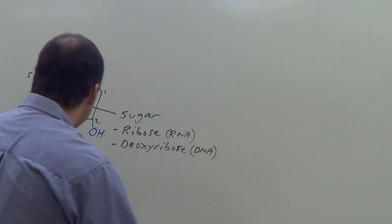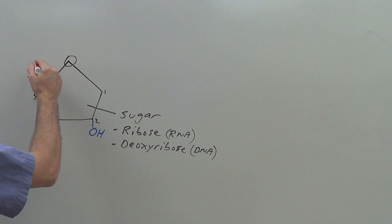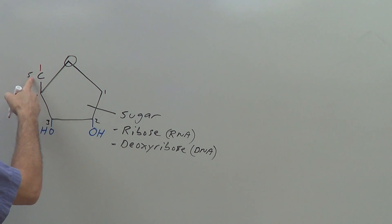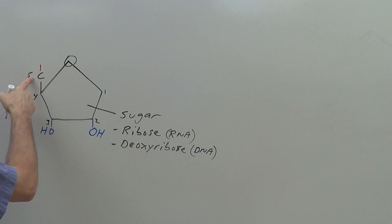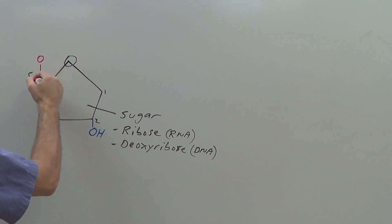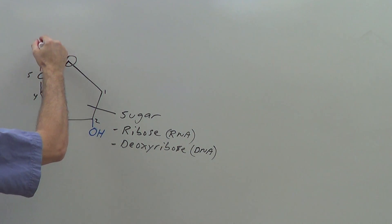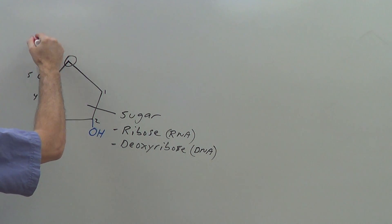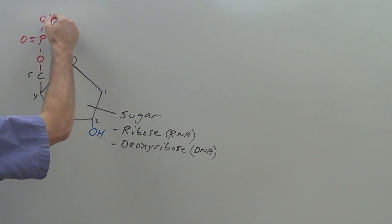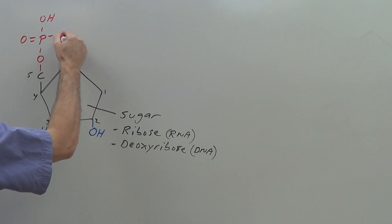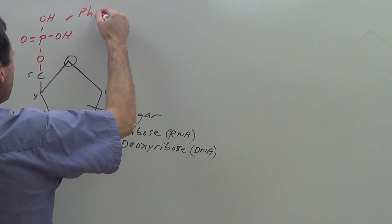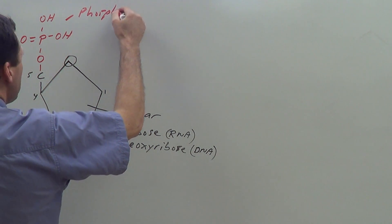The next part of the molecule is a phosphate. I'm going to add a phosphate to the five prime carbon: an oxygen, then a phosphorus with a double-bond oxygen, and two OH groups. That is our phosphate.